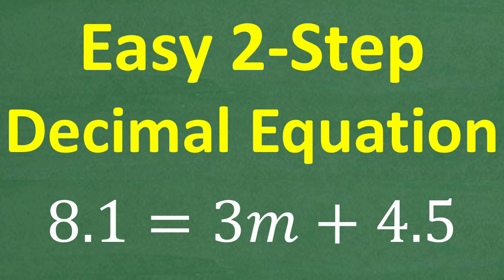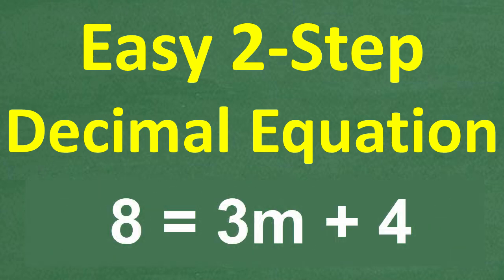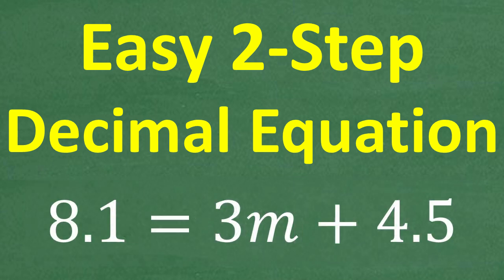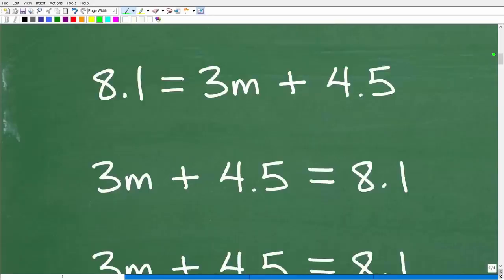If you couldn't figure this problem out, a good approach is to try a similar problem without decimals. For example, could you solve 8 is equal to 3m plus 4? If you could solve that, then you can solve this one too. Don't let the decimals confuse you — we're basically taking the same steps.